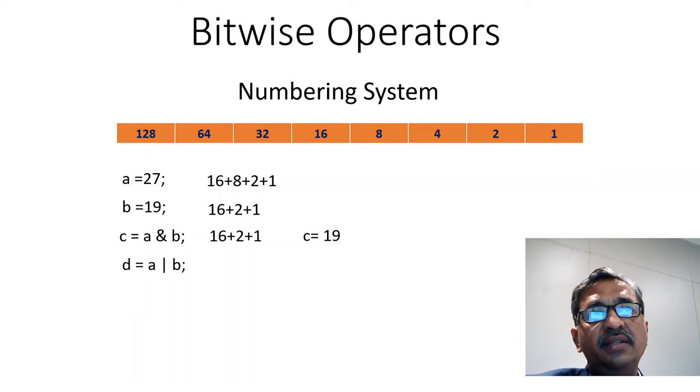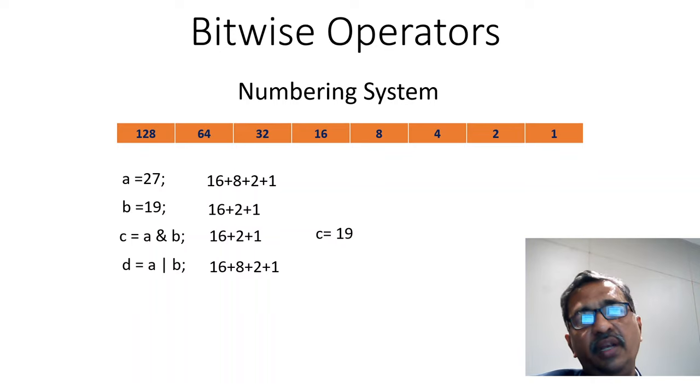Then consider D as D is equal to A or B. So consider all the numbers which are present in A as well as B, only single time. So that is nothing but 16 plus 8 plus 2 plus 1. We are taking each only once. So value of D will be 27.